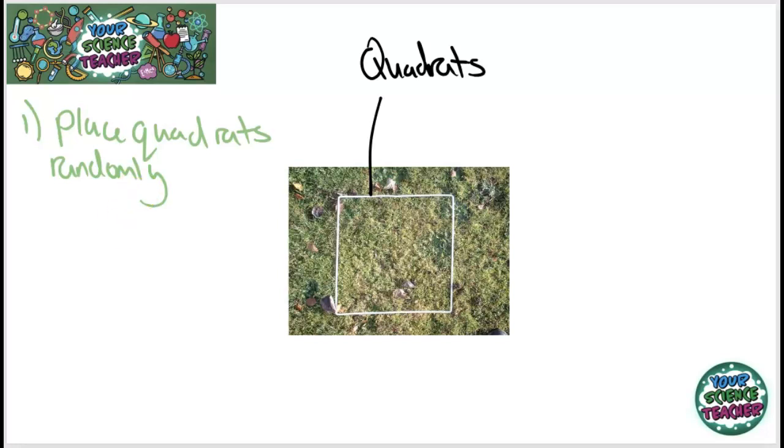As well as placing our quadrat randomly, it's important to take repeats because of the fact you are likely to get a wide variety of different species in a field, and it's important that you should take repeats in order to make sure our results are reliable.